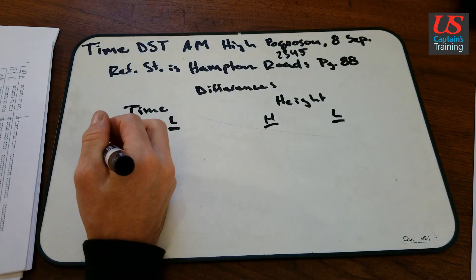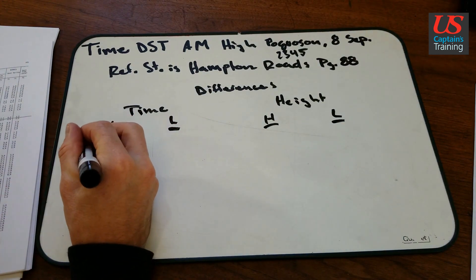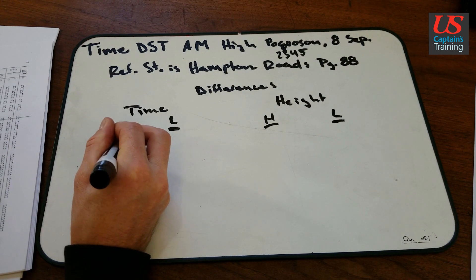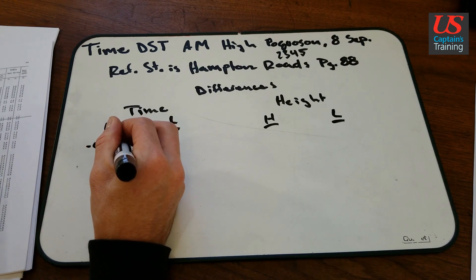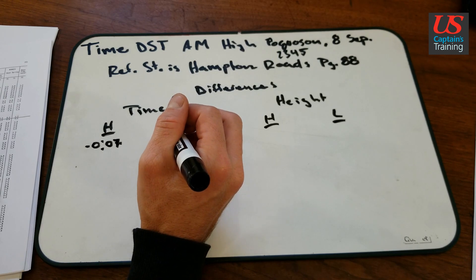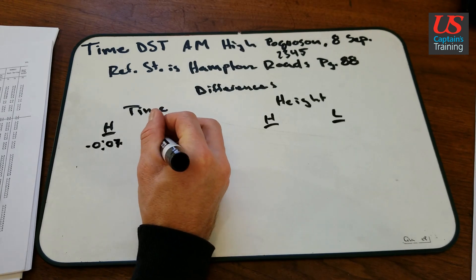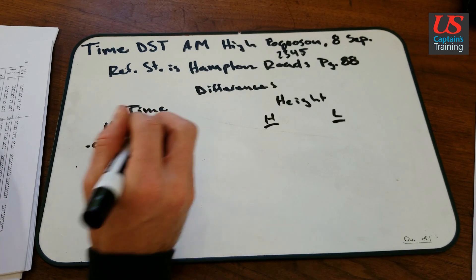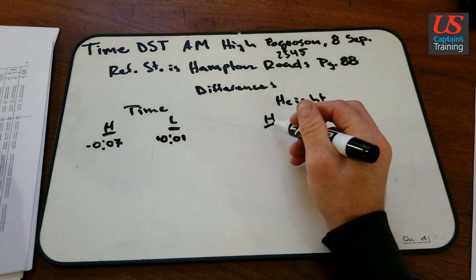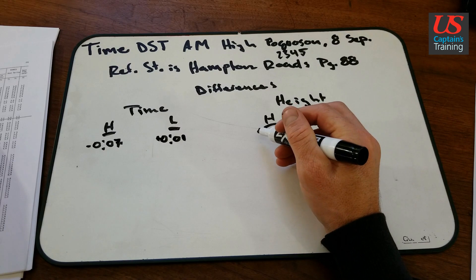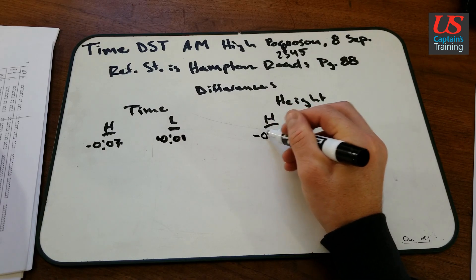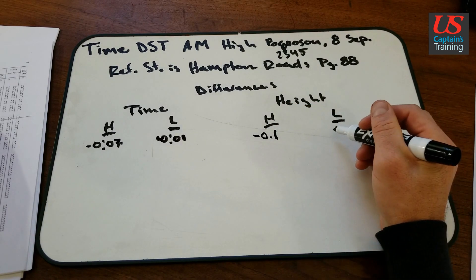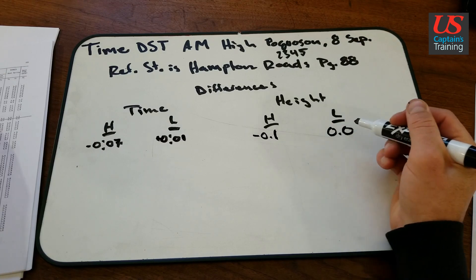So the time of the high water difference, minus 7 minutes, and the low water is plus 1 minute. And then the height difference, height high water difference is minus 0.1 foot, and height low water is 0.0 feet.